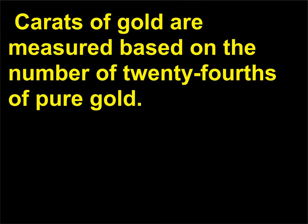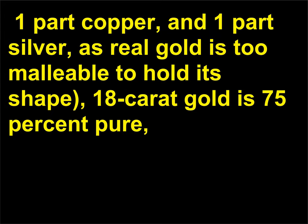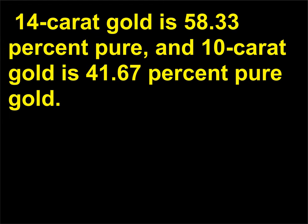Carats of gold are measured based on the number of twenty-fourths of pure gold. For example, twenty-four carat gold is pure gold, but for a goldsmith standard, it is actually twenty-two parts gold, one part copper, and one part silver, as real gold is too malleable to hold its shape. Eighteen carat gold is seventy-five percent pure; fourteen carat gold is fifty-eight point three three percent pure; and ten carat gold is forty-one point six seven percent pure gold.